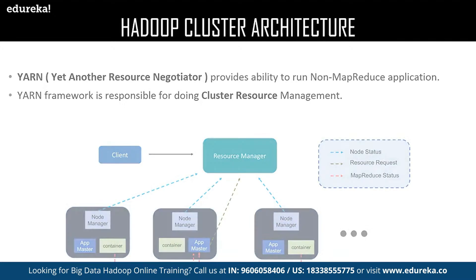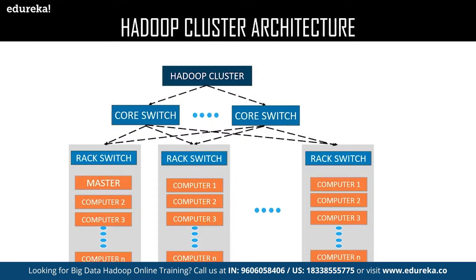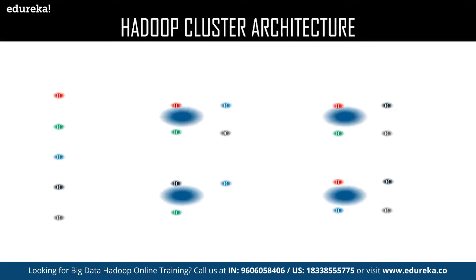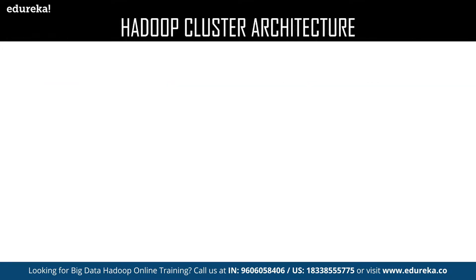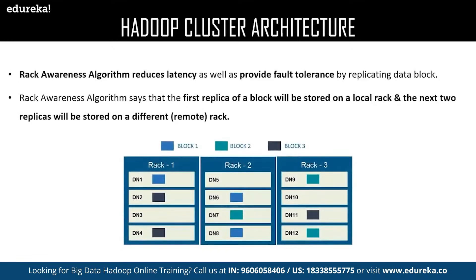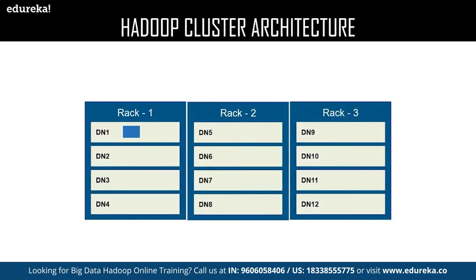Now let us look at the overview of the Hadoop cluster architecture, followed by the rack awareness algorithm. The architecture of Hadoop cluster consists of racks — each rack consists of a set of computers, and one of the racks contains the master. These racks use cores to communicate with each other. The rack awareness algorithm is all about data storage: the first replica of the actual data must be located in the local rack, and the rest of the replicas can be stored on a different remote rack. For example, a data block on DataNode 1, which is on rack one (the local rack), has its replica stored on rack two according to this algorithm.